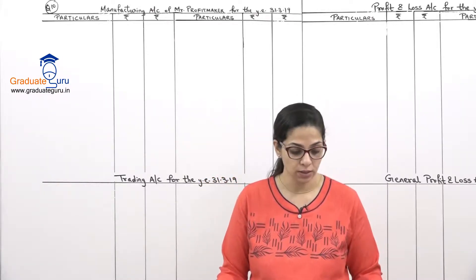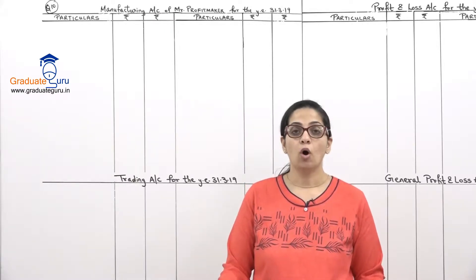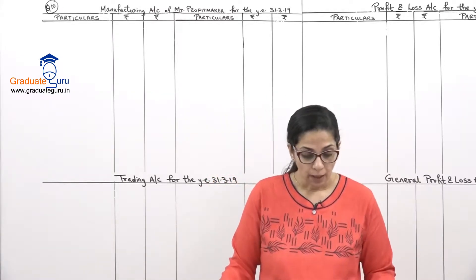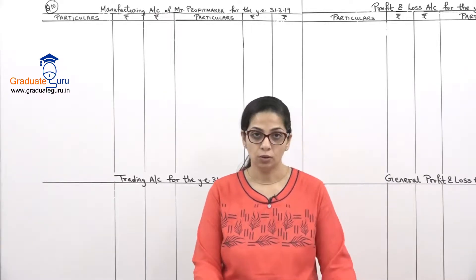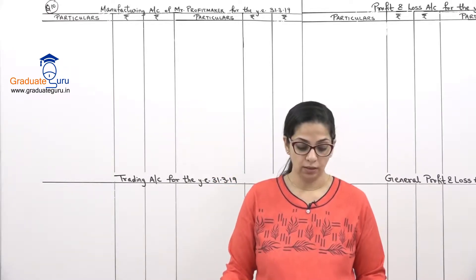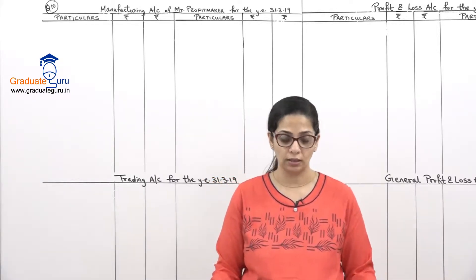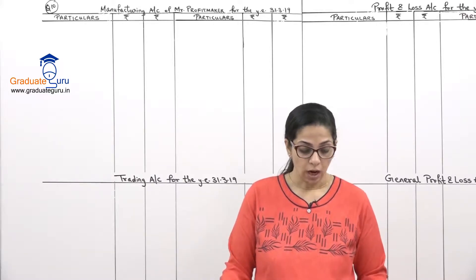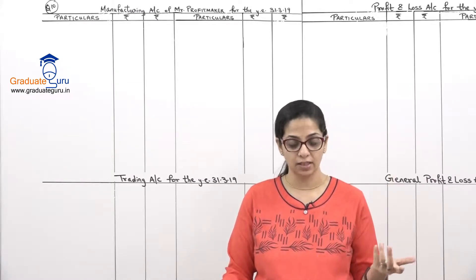We will quickly read the trial balance. Plant and machinery, computers for office - computers' depreciation will go to P&L. Patents and trademarks - this is an intangible asset, something like goodwill. Stock on 1st April is given as raw material and finished goods. This time there is no WIP stock, so we are not going to write that. Purchases, wages, other factory expenses - one amount is given, so we don't have a breakup of factory expenses this time.